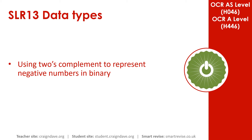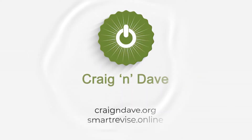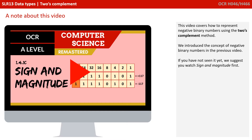In this video, we take a look at how to use 2's complement to represent negative numbers in binary. We introduced the concept of negative binary numbers in the previous video. If you've not seen it yet, we suggest you watch sign and magnitude first.